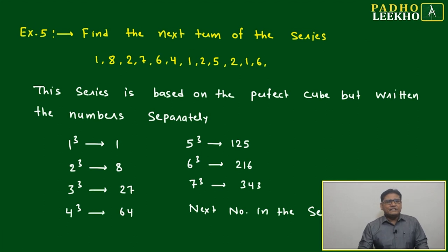Find the next term of the series: 1, 8, 2, 7... What is happening here? After the first term, it is going up, coming down, going up again, coming down. This is a sinusoidal way it is varying.